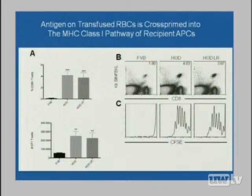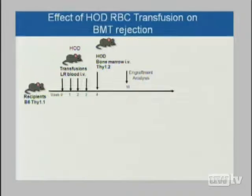Looking at their proliferation by CFSC dilution, it becomes obvious that when you give the HOD blood, leukoreduced or not, you get clear division of these populations. These data indicate that even though red cell antigens are thought of as inducing antibody responses, a red cell antigen can be cross-primed by a recipient antigen-presenting cell into the class I pathway and induce a CD8 T-cell response capable of recognizing that antigen-MHC complex.